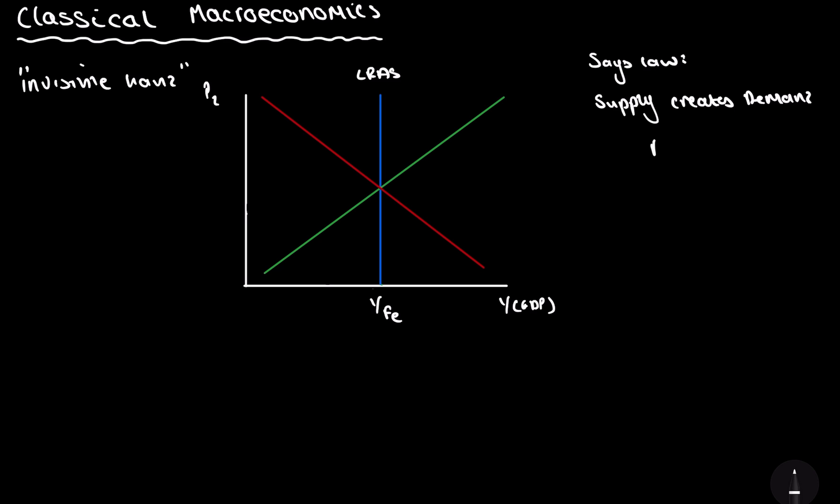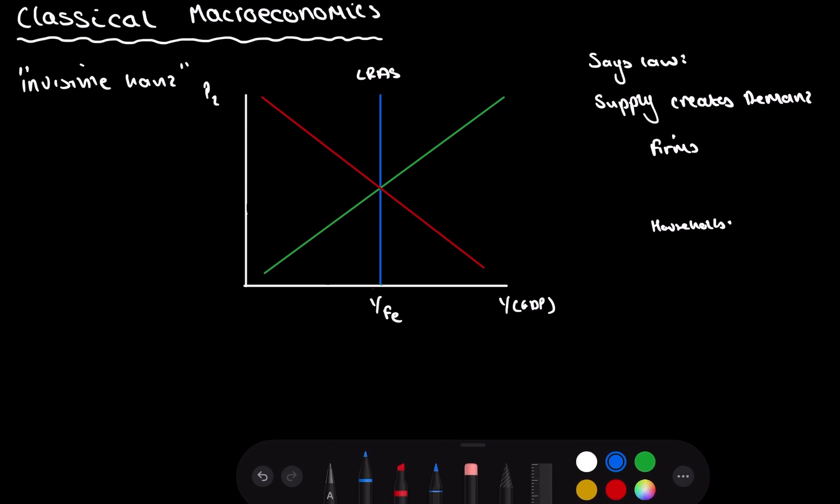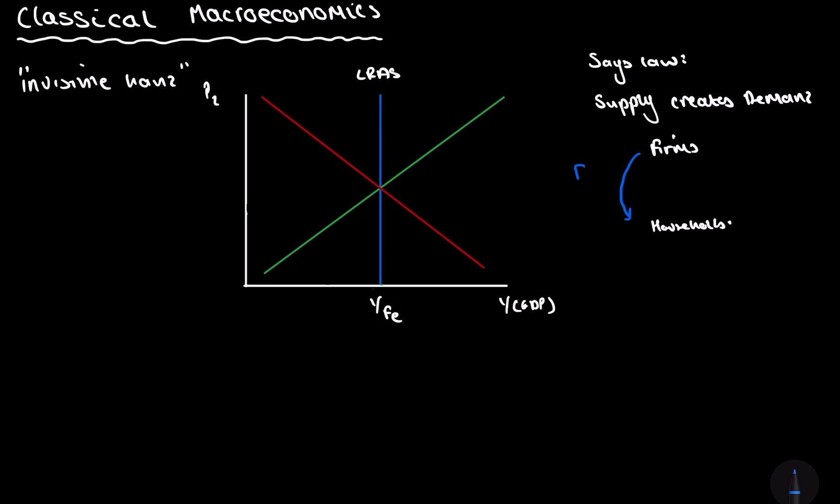If we put firms at the top, households down at the bottom, the firms will pay the households through factor payments, FP. So firms will create products. They will employ more labour. By employing more labour, there'll be more factor payment to the households. And this supply is going to create demand because households now have more money. Therefore, there's going to be more money spent on domestic consumption, which is going to go back to the firm. Obviously, you have some withdrawals from the economy in the form of exports, savings, and taxation. But then you're going to have injections back into the economy in the form of investment, government expenditure and imports. So that's essentially stating that supply, producing these goods, is going to create demand because households have more money to spend on the goods.